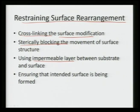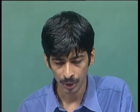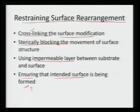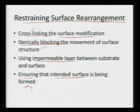After we have done all that, we also need to characterize the surface and ensure that the intended surface is really being formed. Otherwise the overall device is of no use, because we want to make sure that the intended surface is exactly forming and not getting rearranged to a different structure. We want to restrain surface rearrangement by cross-linking the surface and sterically blocking the movement of the surface structure, or by introducing an impermeable layer between the substrate and the surface to minimize movement.